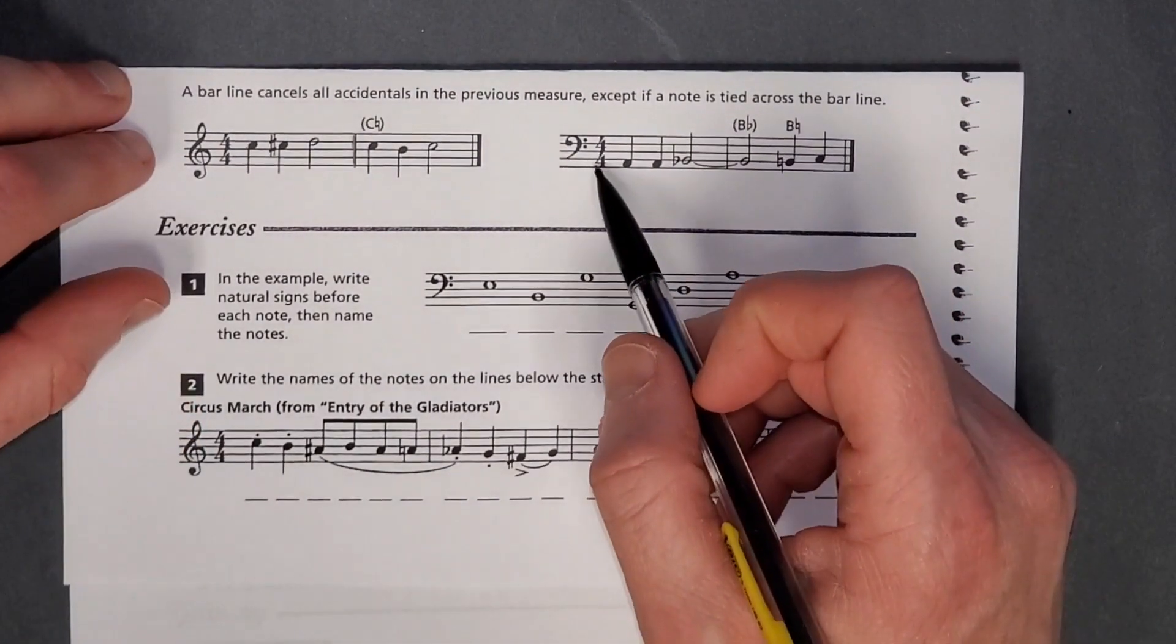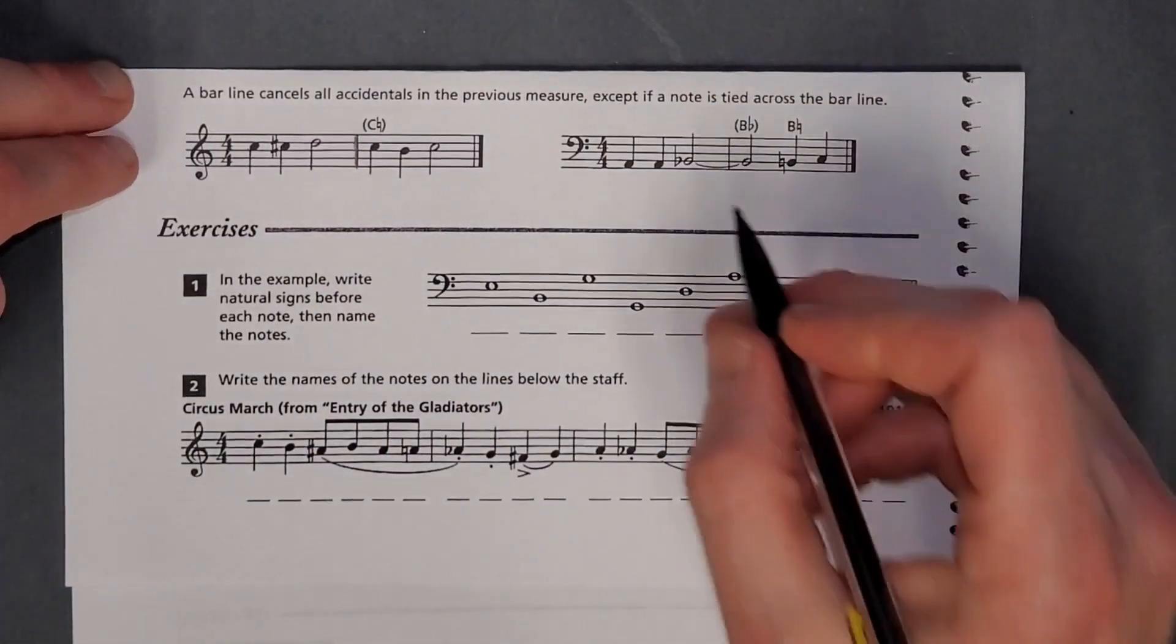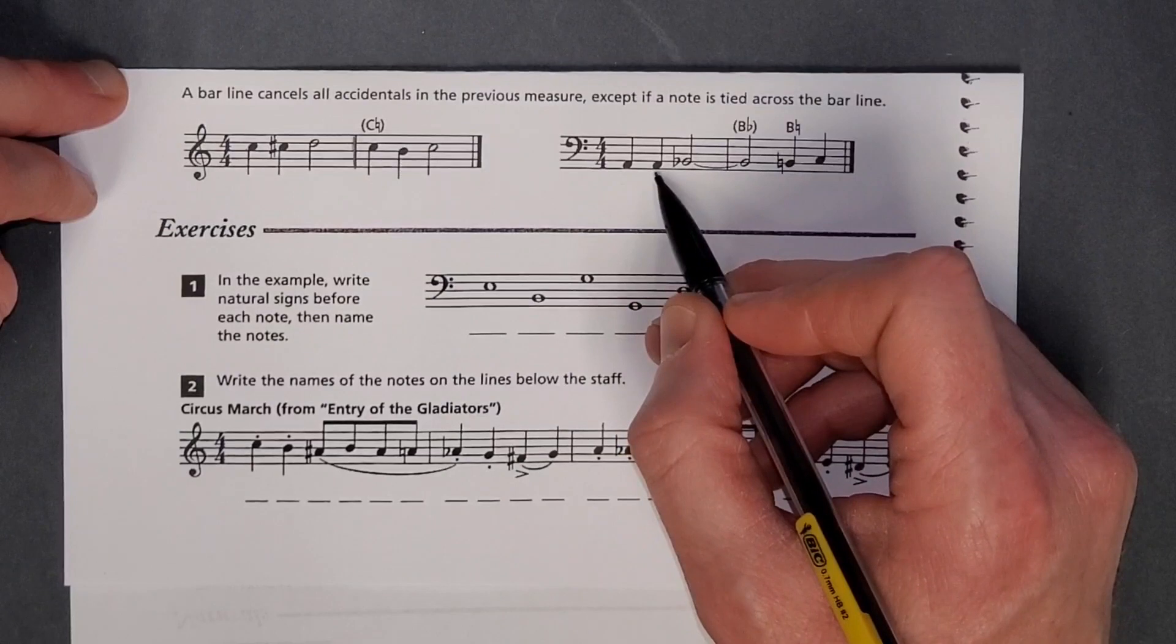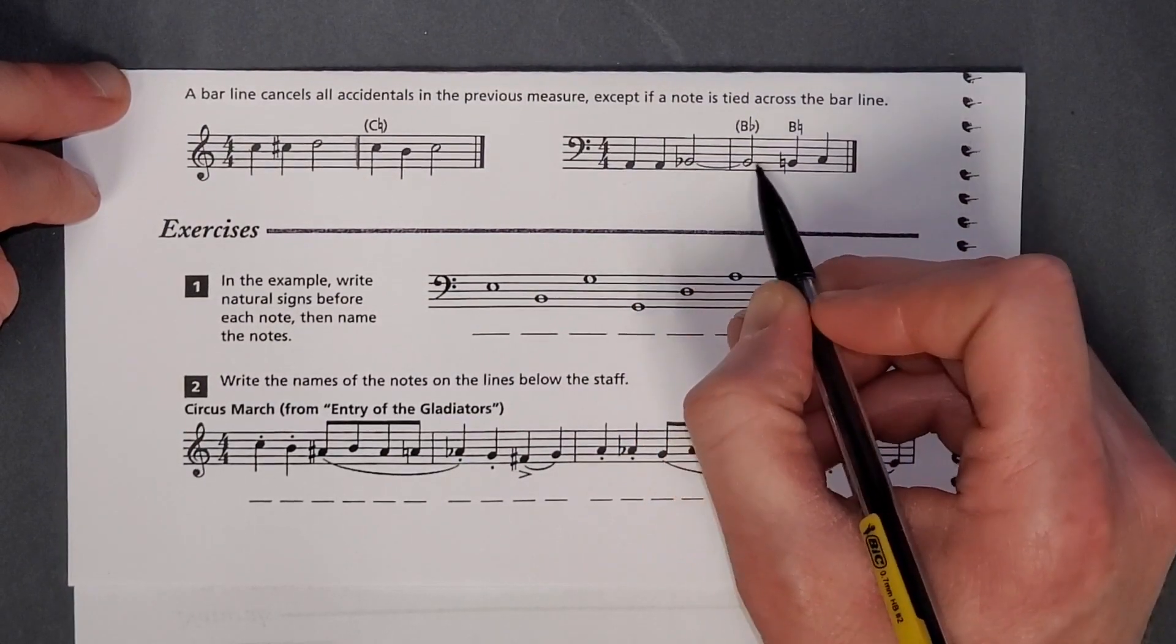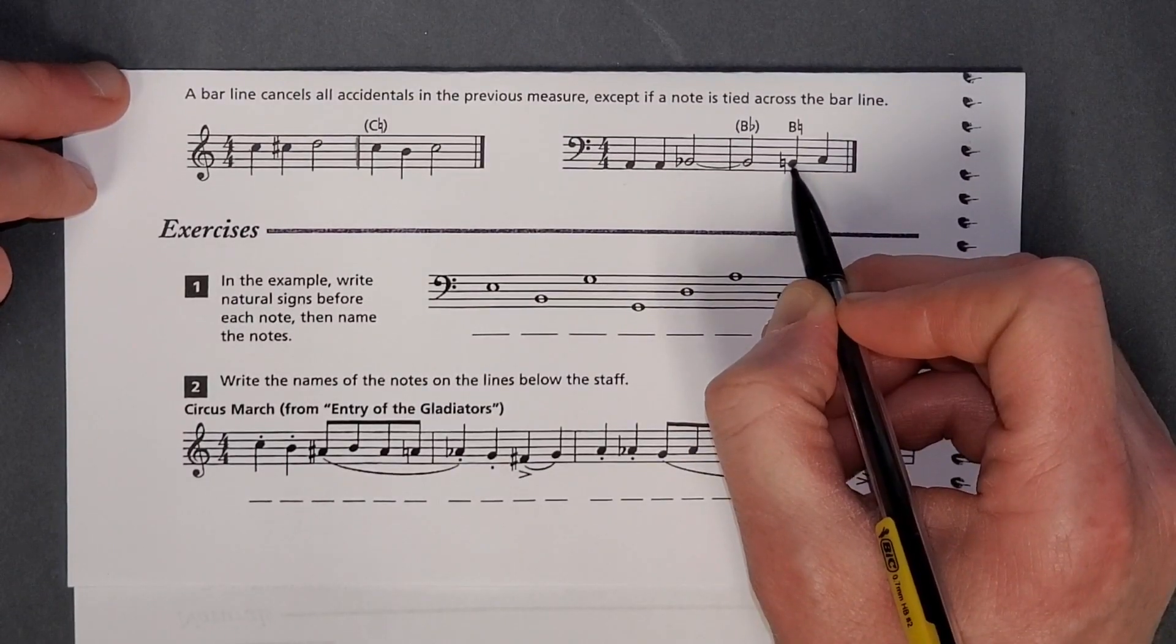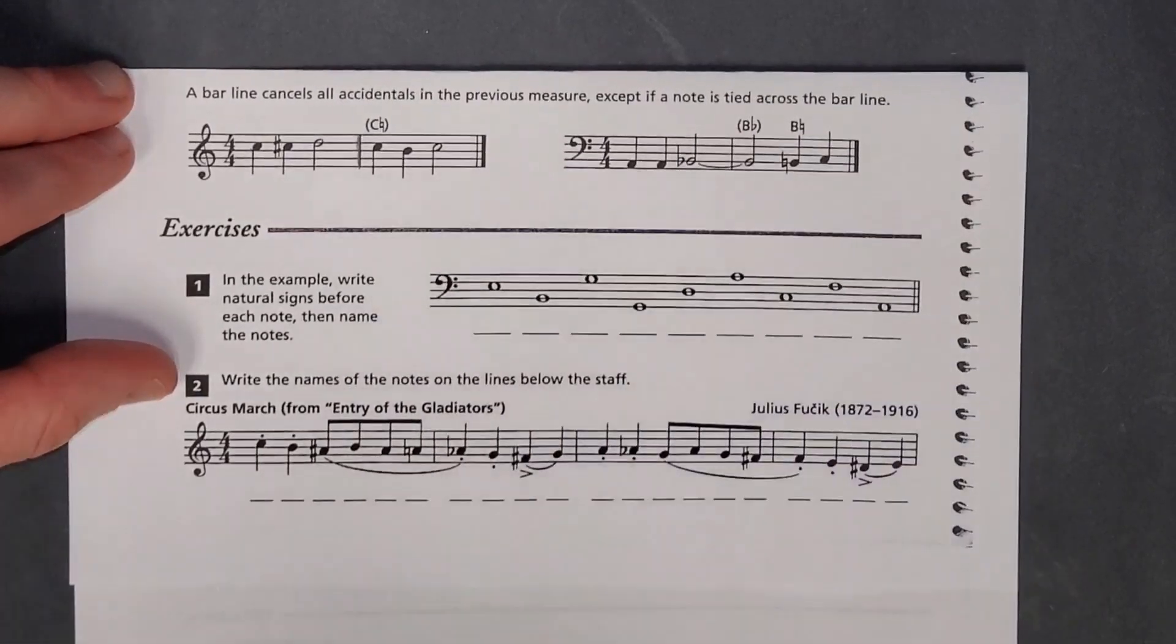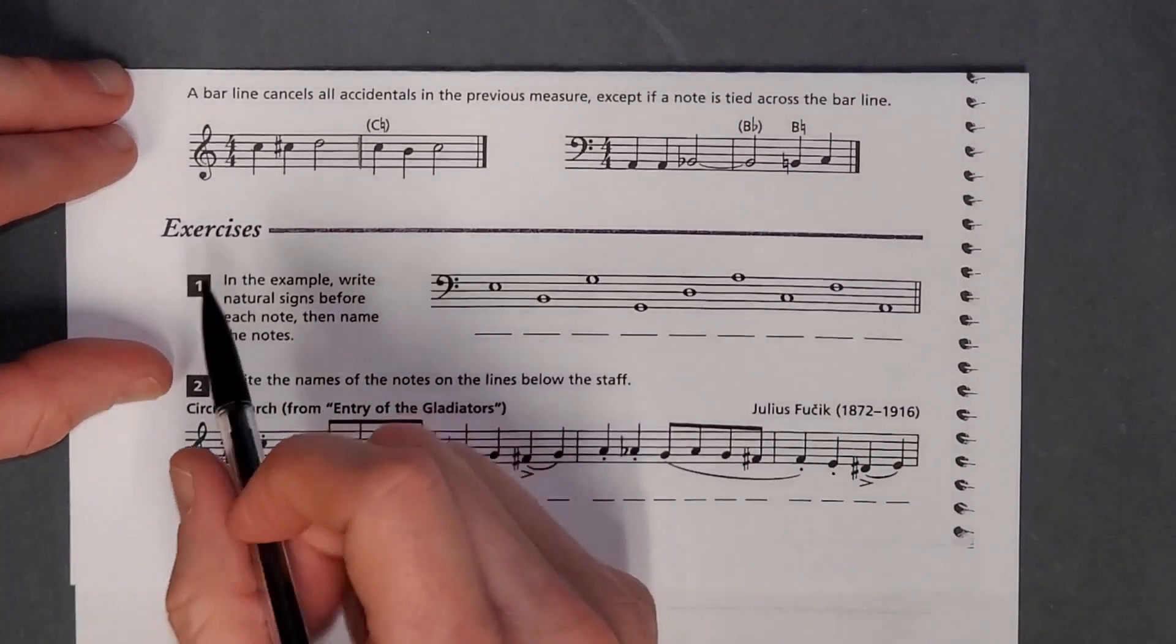It's like a coupon that expires or an effect that wears off at the end of turn if you're like a gamer. So here we go. We have A up to a B flat. This tie keeps it a B flat, and then we go back to a B natural. So that's the one situation where a bar line doesn't cancel an accidental is when it's tied.